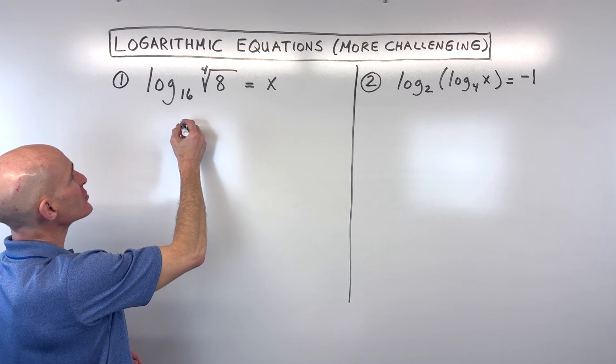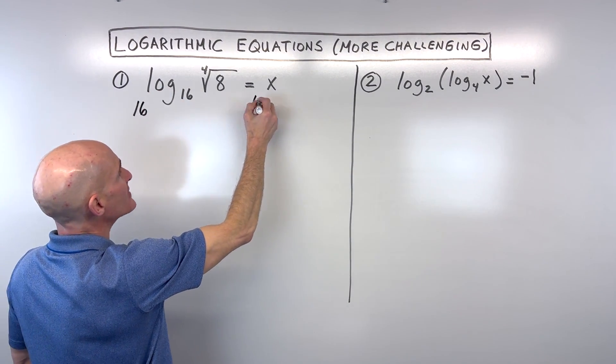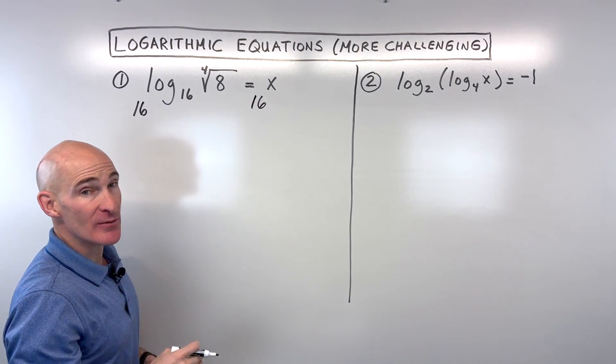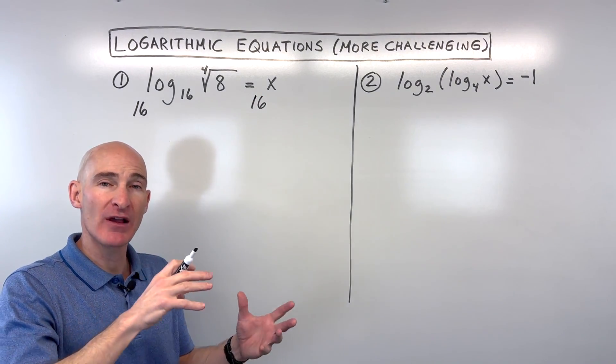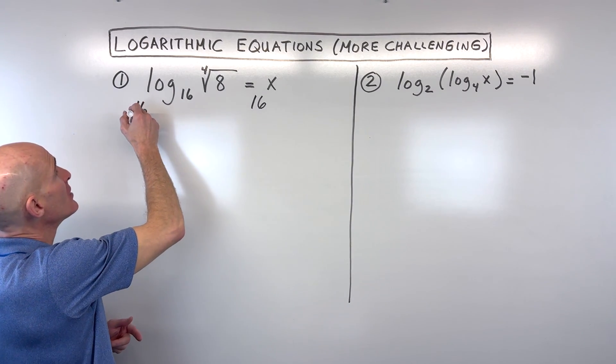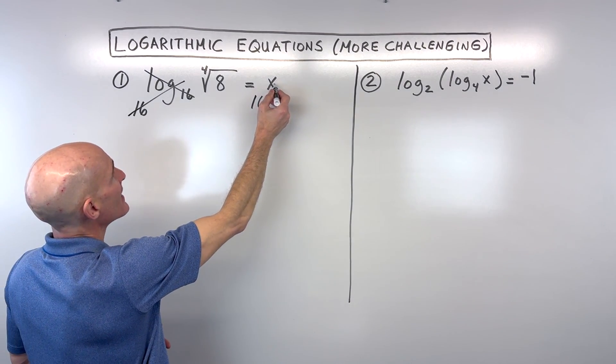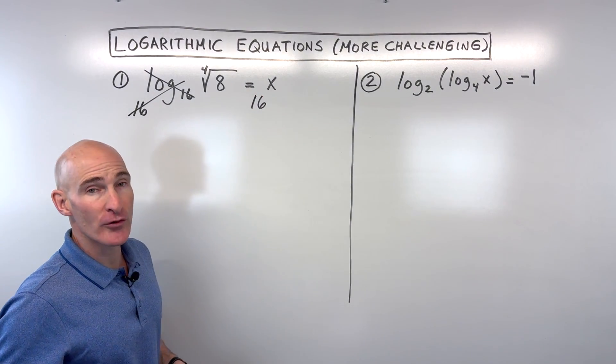Just a refresher here, what you can do is you can exponentiate or raise both sides using that same base 16. Because remember, exponential functions and logarithmic functions are inverses of each other if the bases are the same. So what happens in essence is that these are undoing one another, and we're left with 16 to the x power equals the fourth root of 8.